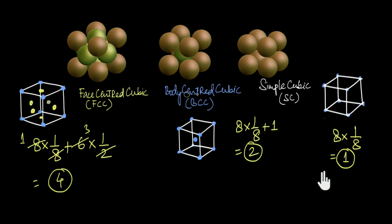In this video we learned how to calculate A_effective of different unit cells, and we don't need to memorize these values for FCC or BCC — we can just calculate them. In the next video we will see how we can use A_effective to calculate the packing efficiencies.